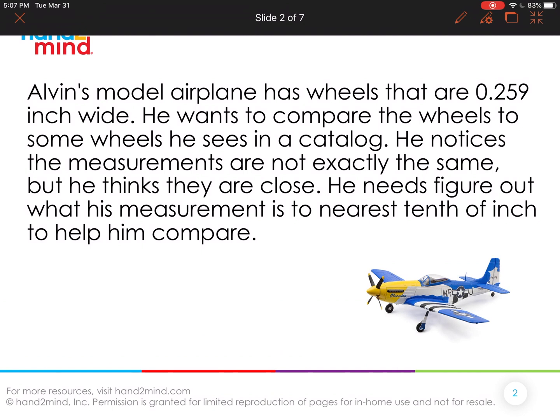So this is Alvin's model airplane, we know, and he knows how big his wheels are. But in the catalog, it doesn't give numbers that are all in the thousandths. It only gives numbers that maybe are in the tenths or even sometimes the hundredths. But in this case, it looks like they're only in the tenths. And you might be asking, well, how do you know that?